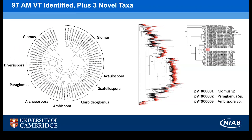Through this I've identified 97 AM virtual taxa, which are roughly equivalent to the species level, covering many of the families and genera that we'd expect to see. On the right-hand side you can see some phylogenetic analyses I undertook, where I identified three previously undescribed taxa: one Glomus, one Paraglomus, and one Ambispora. I'm currently running confirmatory checks on those to make sure that they are indeed novel taxa.